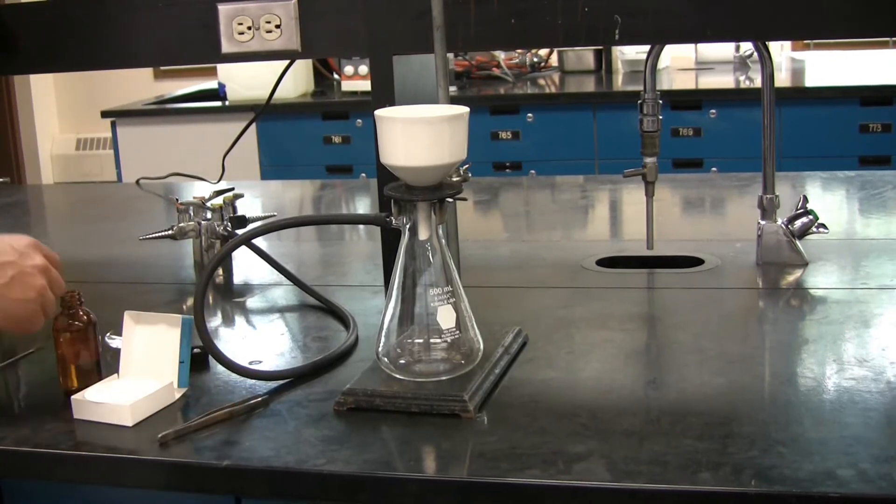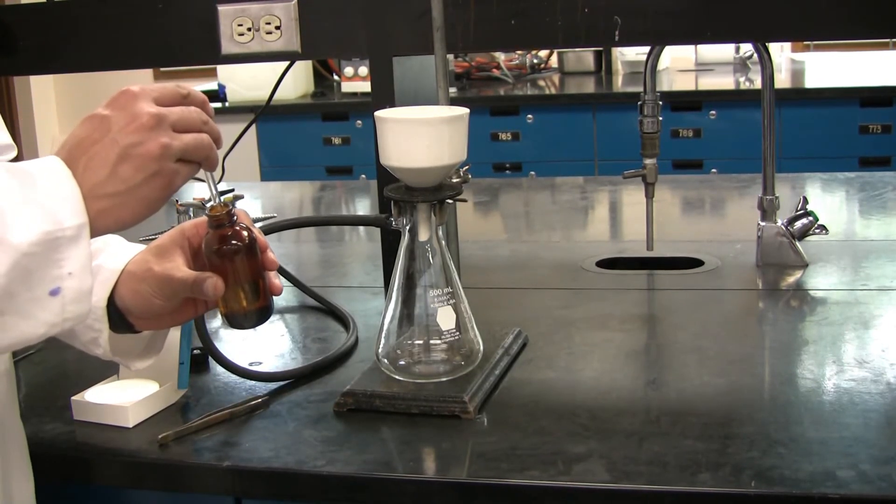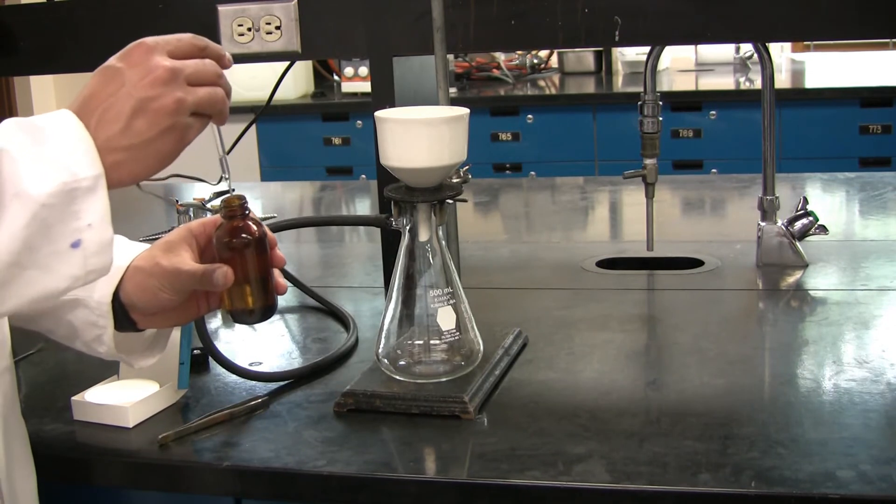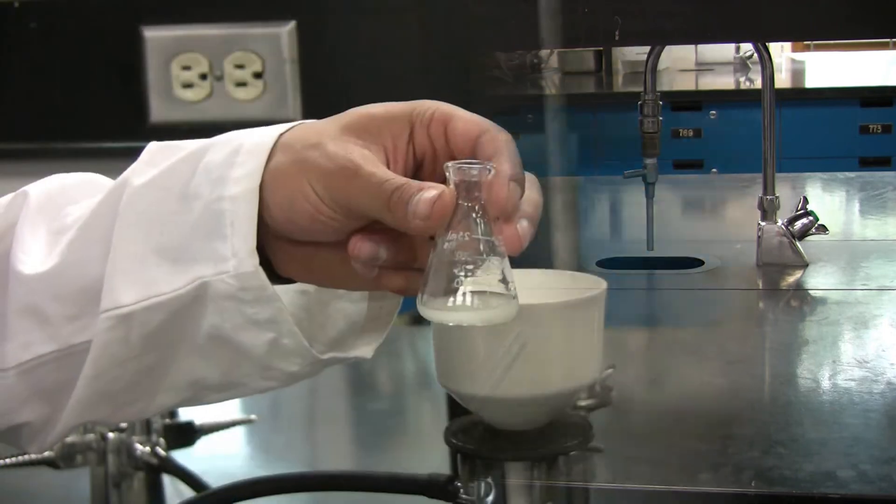Next, add your Filter Paper to the Buchner Funnel Apparatus and using Cold Solvent, you need to wet the Filter Paper. This is important and not using water, otherwise your Crystals might re-dissolve.